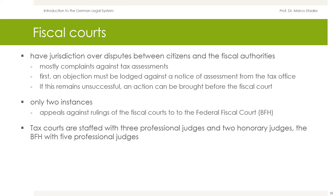The fiscal courts have jurisdiction over disputes between citizens and the fiscal authorities — in the vast majority of cases, complaints against tax assessments. First, an objection must be lodged against a notice of assessment from the tax office. If this remains unsuccessful, an action can be brought before the fiscal court. Appeals against rulings of the fiscal courts may be made to the Federal Fiscal Court, the Bundesfinanzhof. There are only these two instances. Tax courts are staffed with three professional judges and two honorary judges, while the Federal Supreme Finance Court has five professional judges.